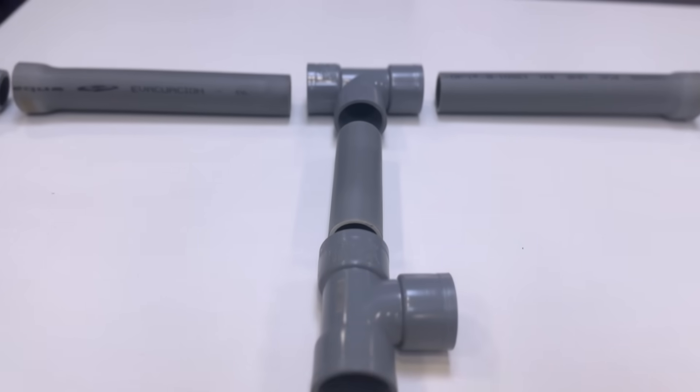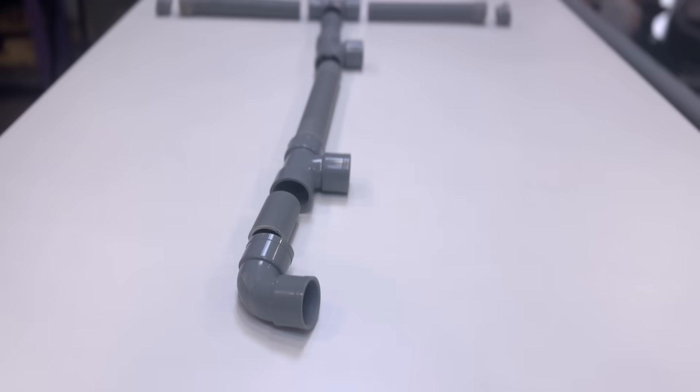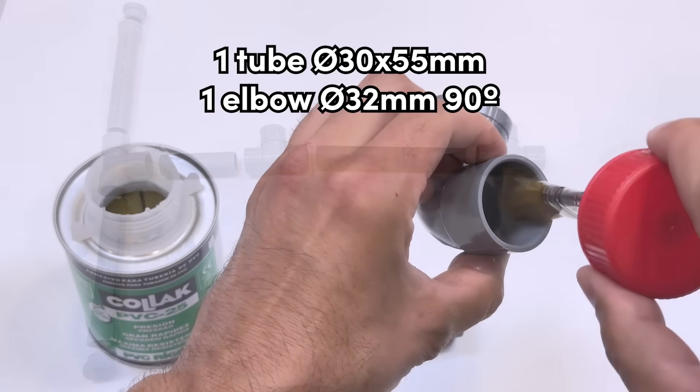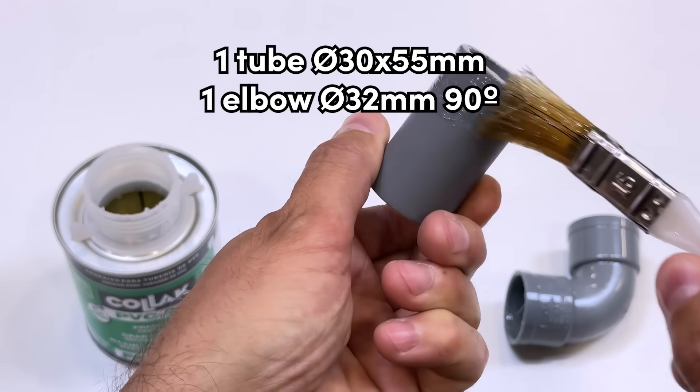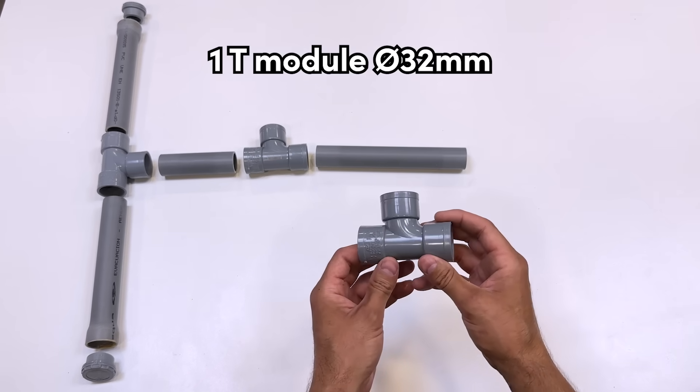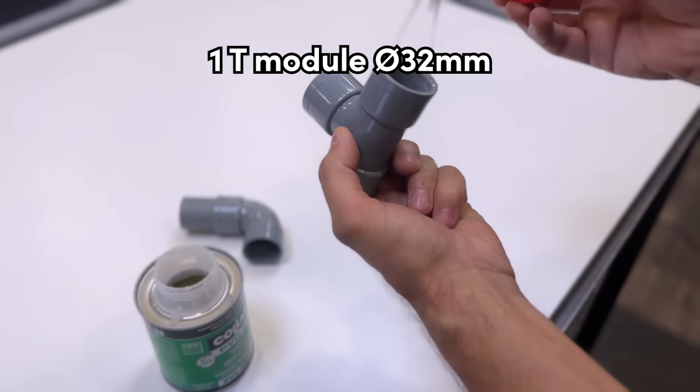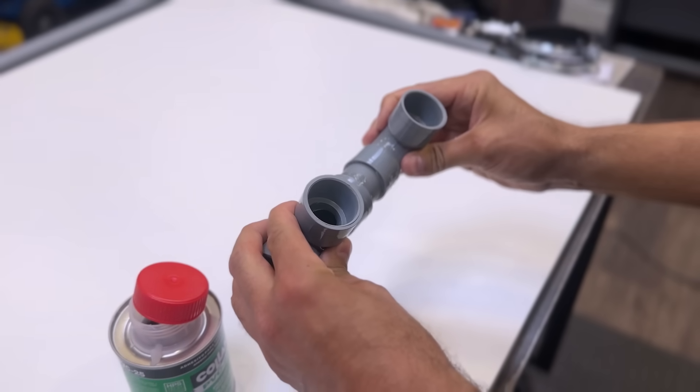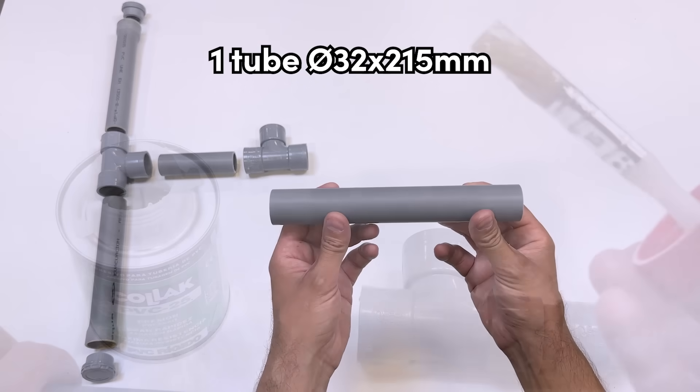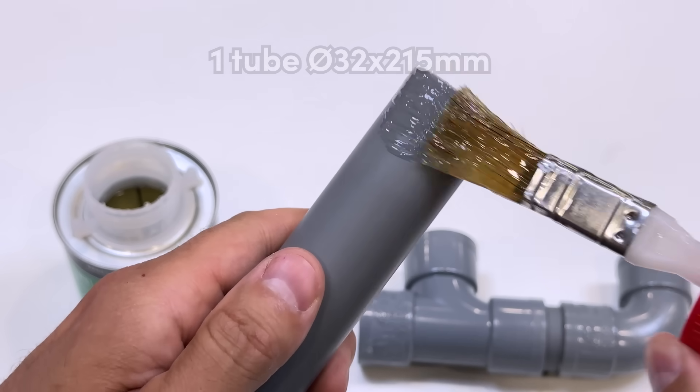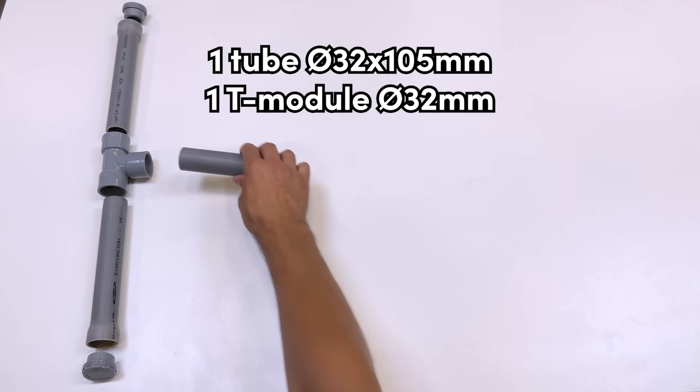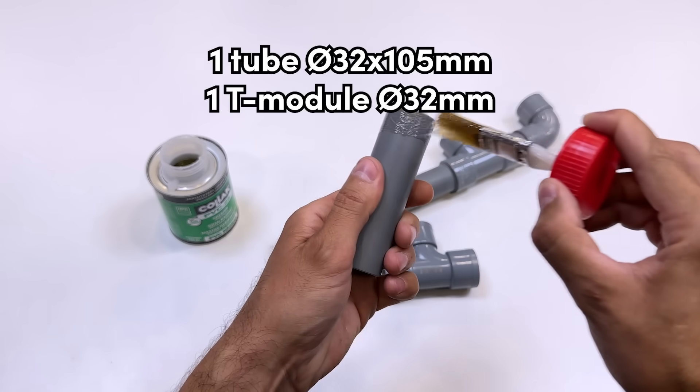Here we have all the base elements we're going to join. We start with a tube of 30 x 55 millimeter diameter and this elbow of 32 millimeter diameter at 90 degrees. We continue with this 32 millimeter T. Now we glue this 32 for 215 millimeter tube, and we also glue this T and this 32 for 105 millimeter tube.